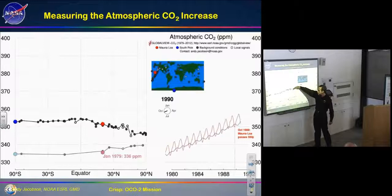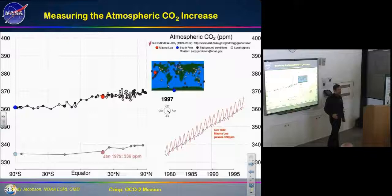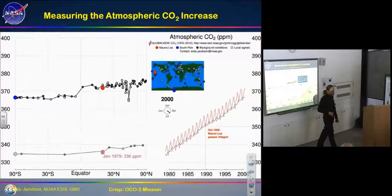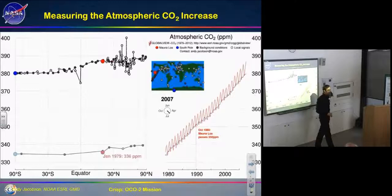This is Northern Hemisphere land plants basically drawing CO2 out in spring and summer, then putting it back in fall and winter. The Southern Hemisphere is anti-correlated — it goes down when the Northern Hemisphere goes up. These ground-based measurements tell us a tremendous amount about the system, but they also show that the total amount of CO2 in the atmosphere just keeps going up.